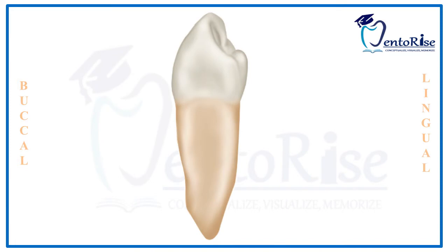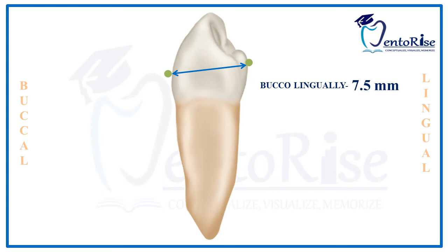The first heading under the mesial aspect would be the dimensions. The buccolingual dimension, as measured from the greatest curvature buccally and lingually, comes out to be 7.5 mm. The buccolingual dimension at the cervix is 6.5 mm.